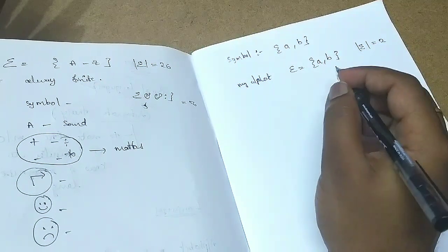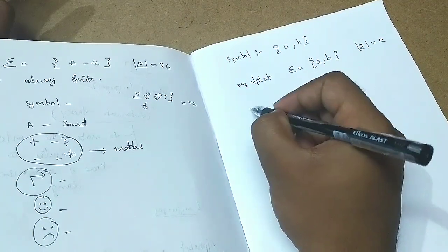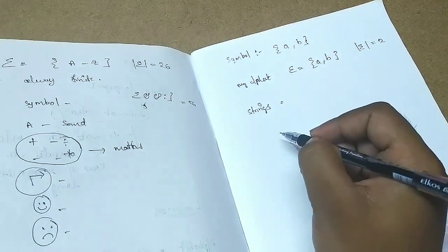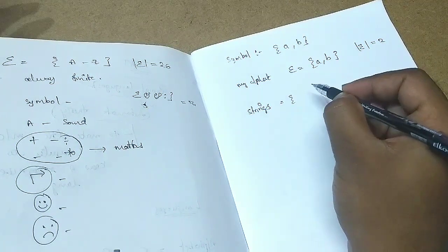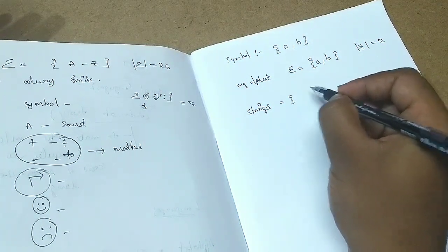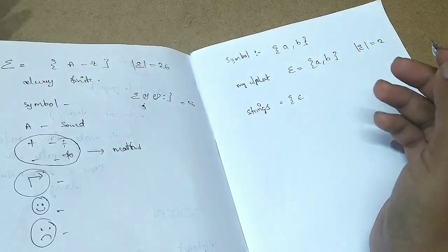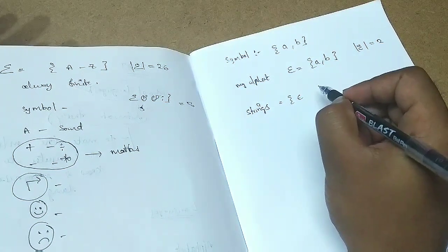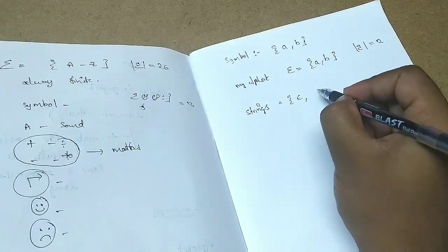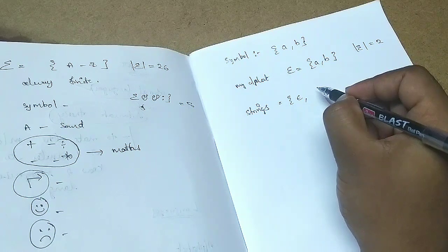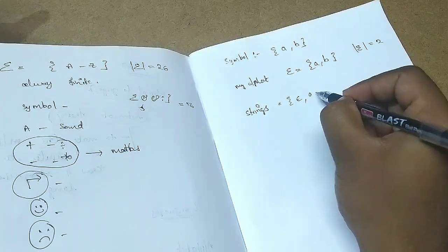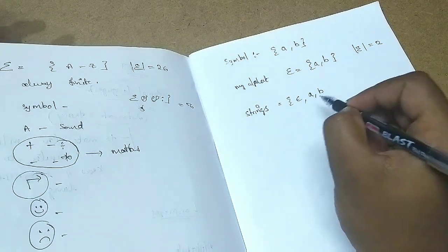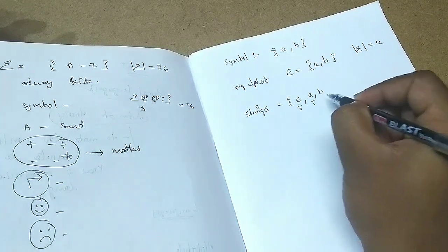The null string is called epsilon — that is a string with zero symbols. The string with zero symbols is called epsilon and it is also called a null string. The second string consists of only one symbol, that is a or b. So my string of length 0 is epsilon, and strings of length 1 are a and b.